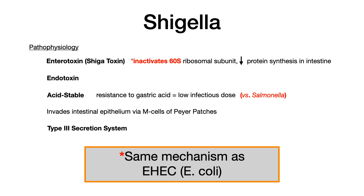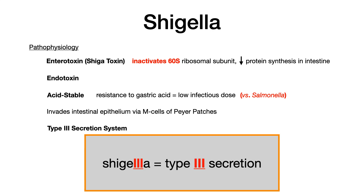What's really high yield to know is that the mechanism of Shiga toxin — inactivation of the 60S ribosomal subunit — is identical to the mechanism of the toxin in EHEC E. coli. For a mnemonic, think of the L's in Shigella representing the number 3 for the Type 3 secretion system. Know these facts for test day.